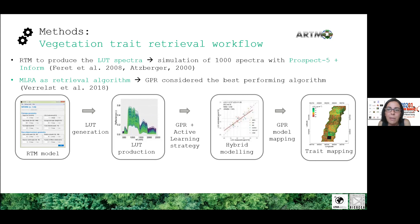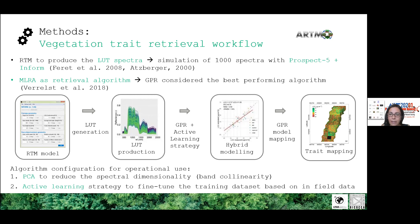A machine learning algorithm was trained to learn the relationship between the spectra and the model input variables — that is, the parameters describing the canopy and leaf characteristics. The model trained on the simulated dataset is finally applied to the real remote sensing data.